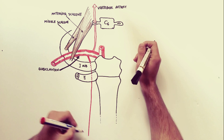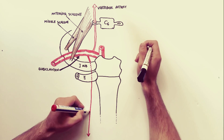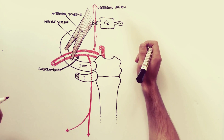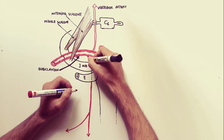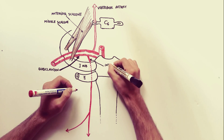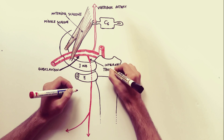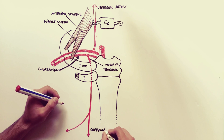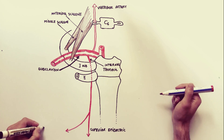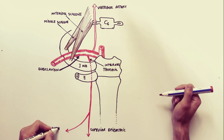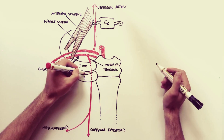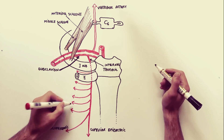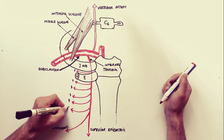The internal thoracic artery, also known as the internal mammary artery, arises from the inferior aspect of the first part of the subclavian artery. It passes downwards to enter the thorax behind the sternoclavicular joint, then runs vertically downwards parallel with the lateral margin of the sternum. At the level of the 6th intercostal space it divides into two terminal branches: the superior epigastric artery and the musculophrenic artery. It also gives off anterior intercostal branches for the first six intercostal spaces.